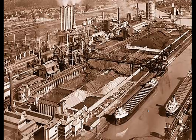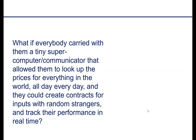Coase's explanation makes sense of why we had something like the Rouge factory. When Coase was writing, both my grandfathers worked at this Ford factory in Dearborn, Michigan making Model As — ships brought in coal, iron, wood, rubber, and sand, and Model As rolled out the other end. It was the most vertically integrated factory the world had ever seen, with over 100,000 people. Henry Ford owned rubber plantations in Brazil and oak forests in Michigan. But imagine a thought experiment: if everyone carried a tiny supercomputer allowing them to look up prices for everything and negotiate contracts with strangers in real time — what would happen if transaction costs for using markets approached zero? We are now living through that thought experiment.